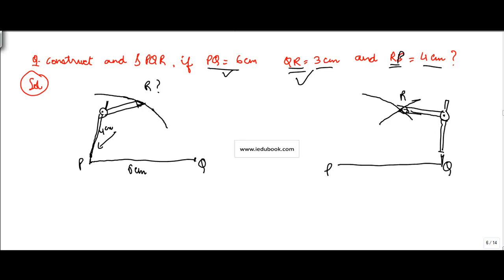And what you need to do then is that wherever this intersection happens, join this point with point P. You will notice that PR is equal to 4 centimeters because that's how we took the distance, and QR will be equal to 3 centimeters.